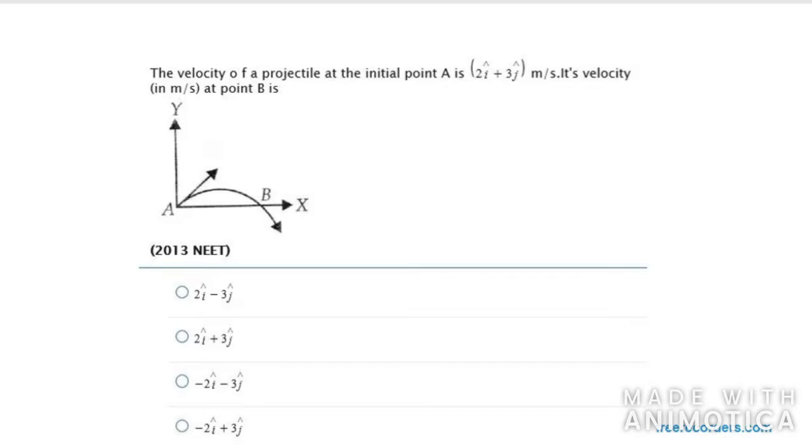As you can see in the figure, the velocity in the x direction, the component is actually unchanged. But if I talk about y, it is in negative direction. That means my y is actually changed. So the i component is 2i cap only and the j component is changed to minus 3j cap. So my right answer for this is the second one.